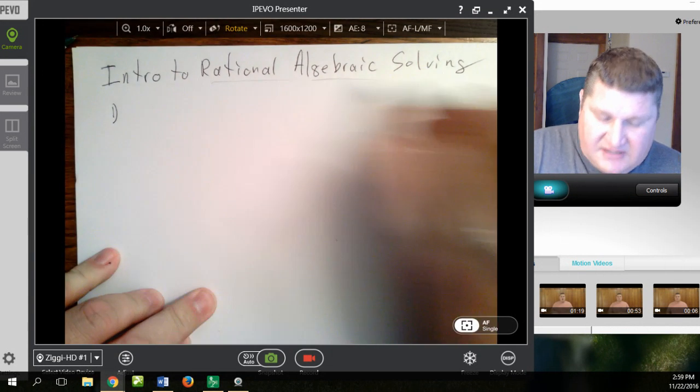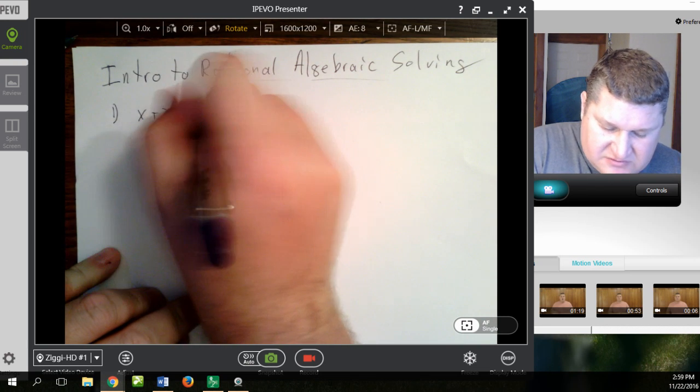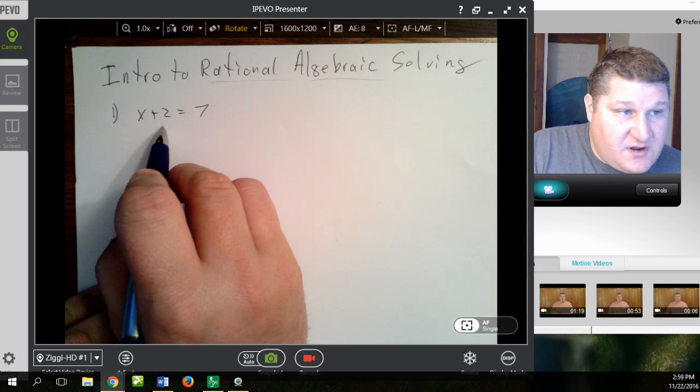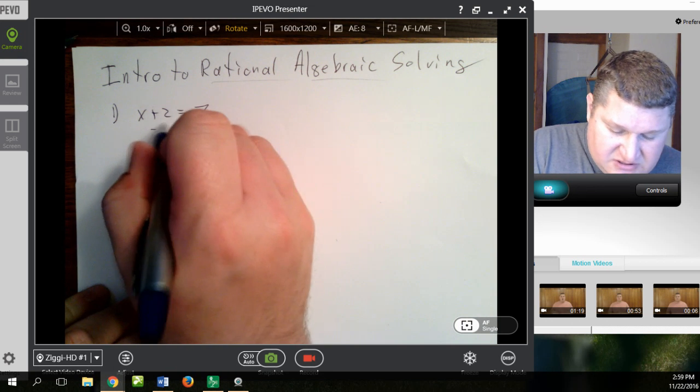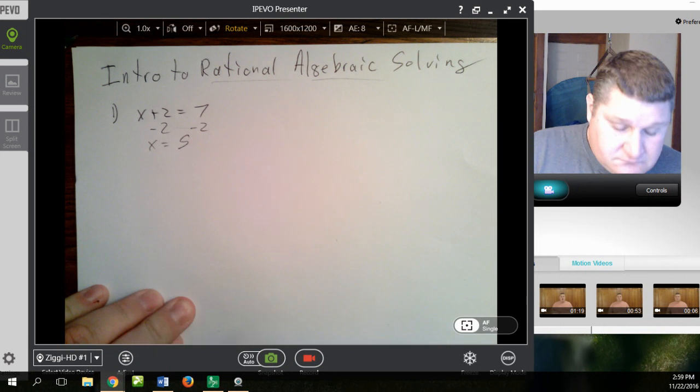Rational algebraic is no more different than regular solving. If I have x plus 2 equals 7, all I have to do is get all the numbers over to one side. So I'm going to say minus 2, minus 2, x equals 5.